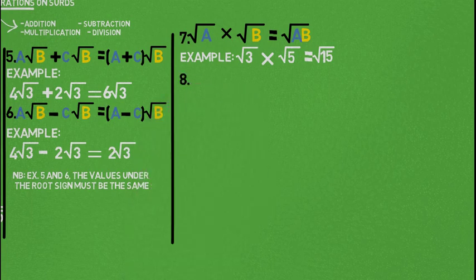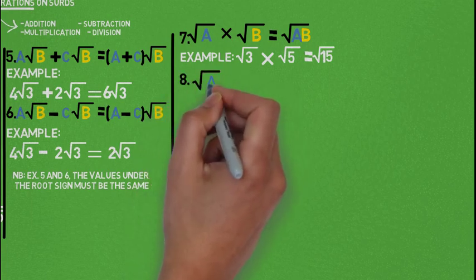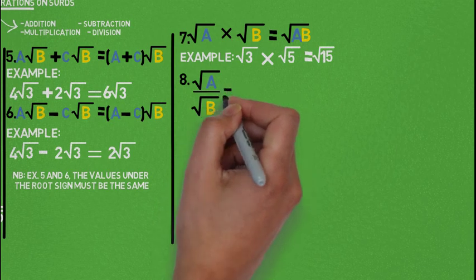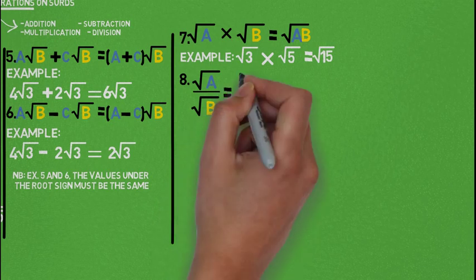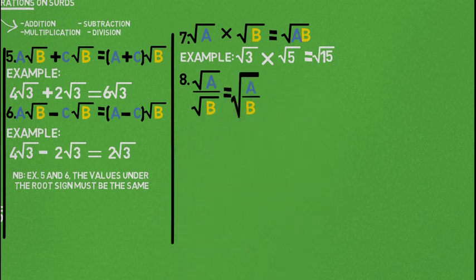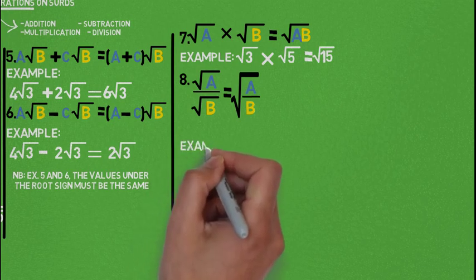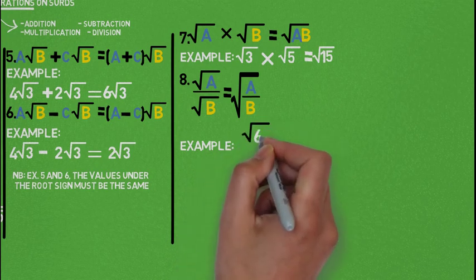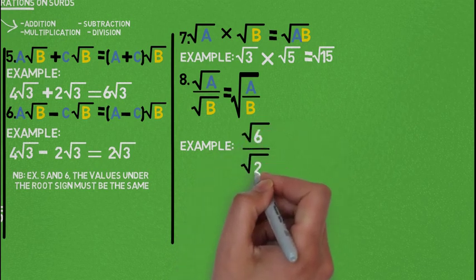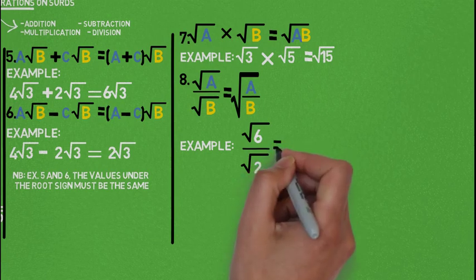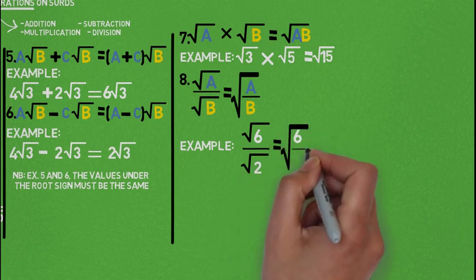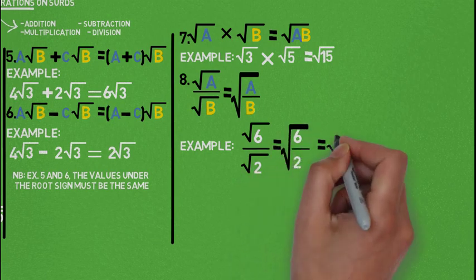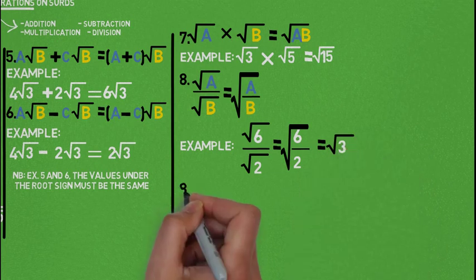Property number 8: root of A divided by root of B. Similarly, we divide A by B, giving root of (A divided by B). An example would be root of 6 divided by root of 2. We have root of (6 divided by 2). Since 6 divided by 2 is 3, that gives us root of 3.